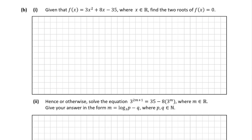Moving on to part b part 1, it says given that our function f of x equals 3x squared plus 8x minus 35, find the two roots of f of x equals 0. There are two different ways of solving our quadratic equation: we can either use the quadratic formula or factorize the expression and solve for x. Today we're going to use the quadratic formula, so let's remind ourselves of what that formula is.